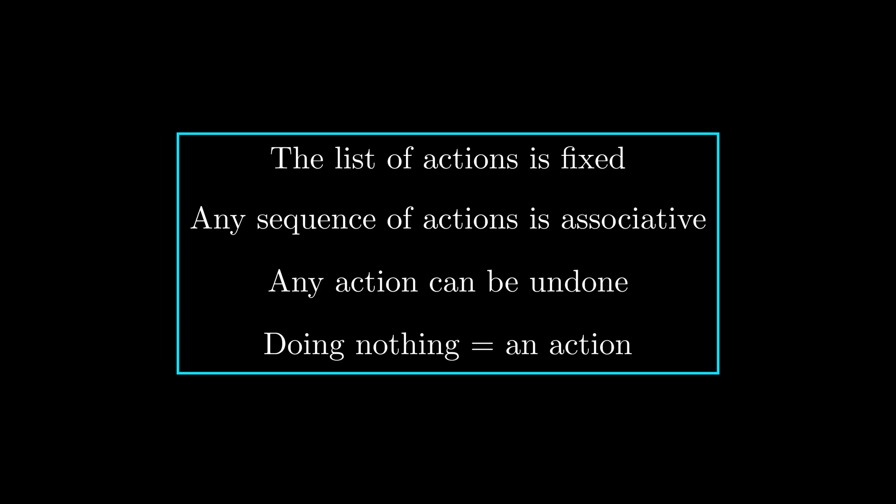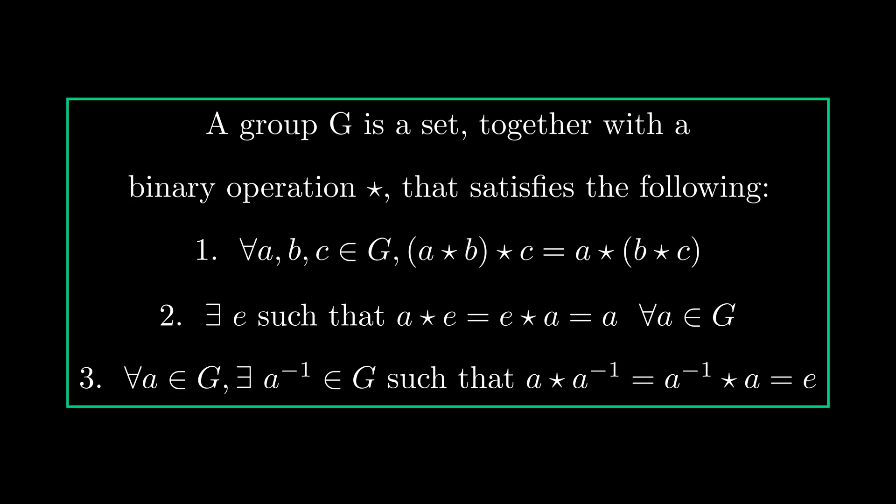And the definition of a group simply encodes these ingredients into a precise mathematical form. The formal definition says that a group G is a set together with a binary operation that satisfies the following three criteria.